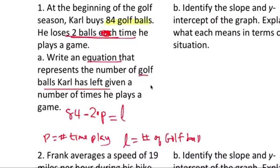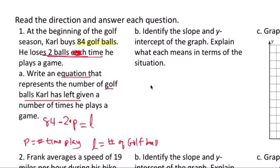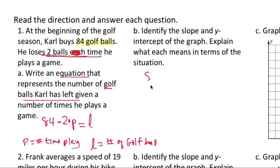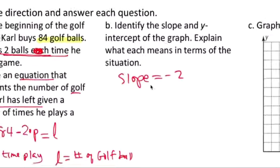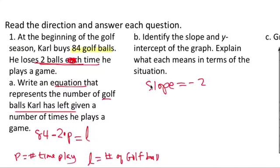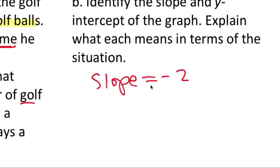Okay, that's it. Identify the slope. Slope is negative two. Y-intercept? Oh, that means that's easy. Two times he loses two balls. So this means loses two balls each